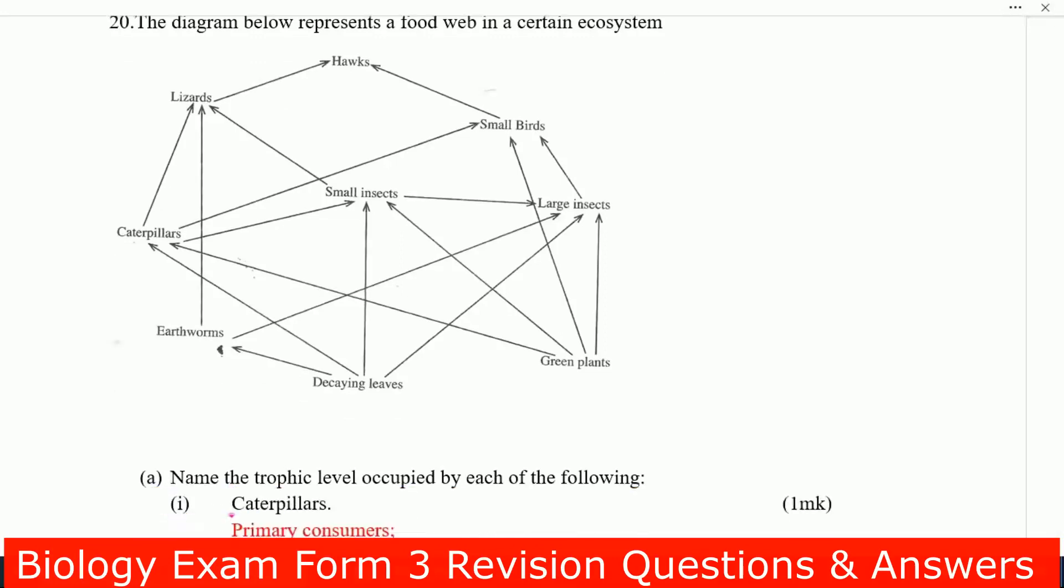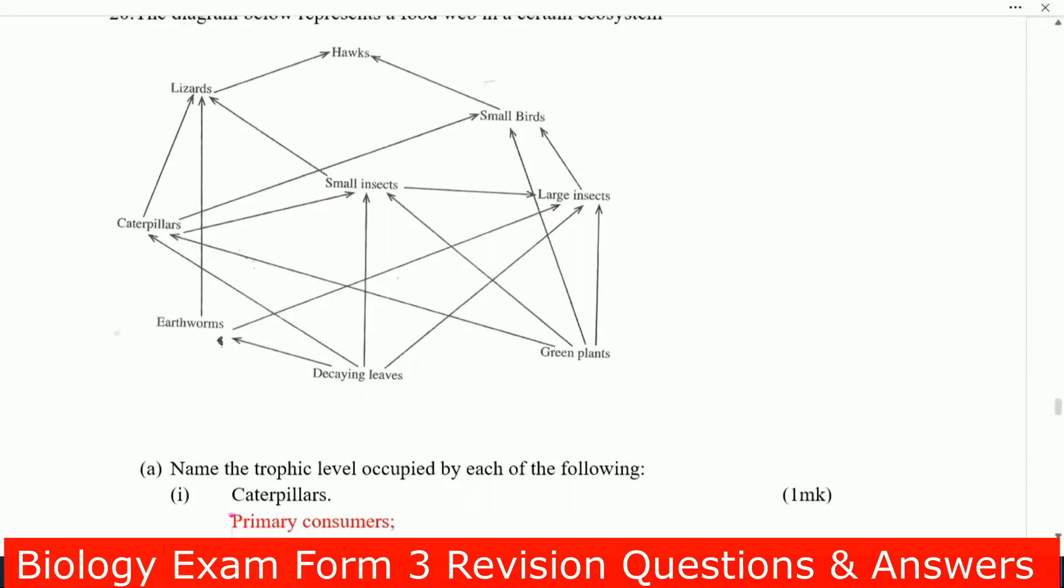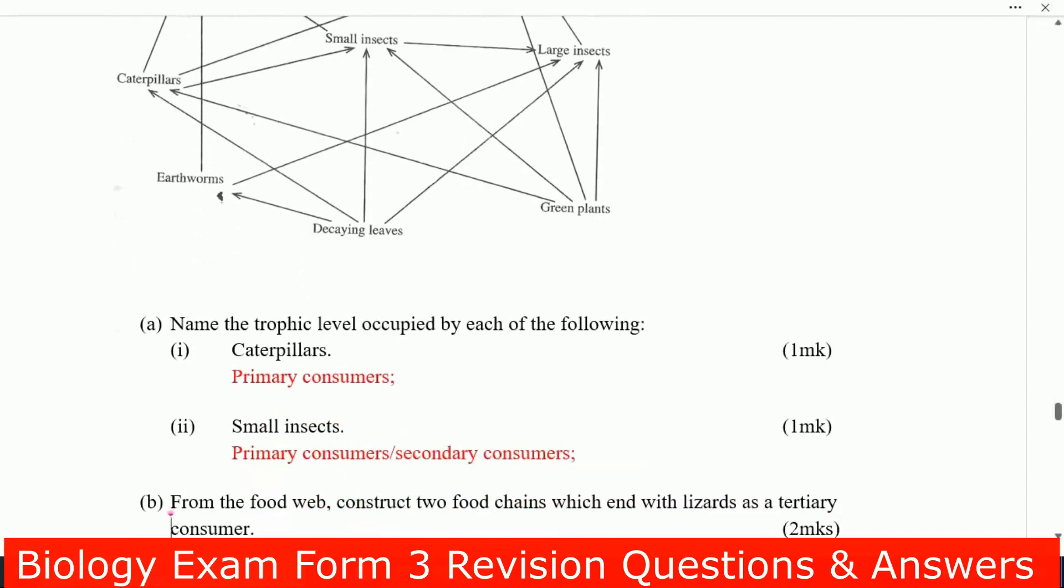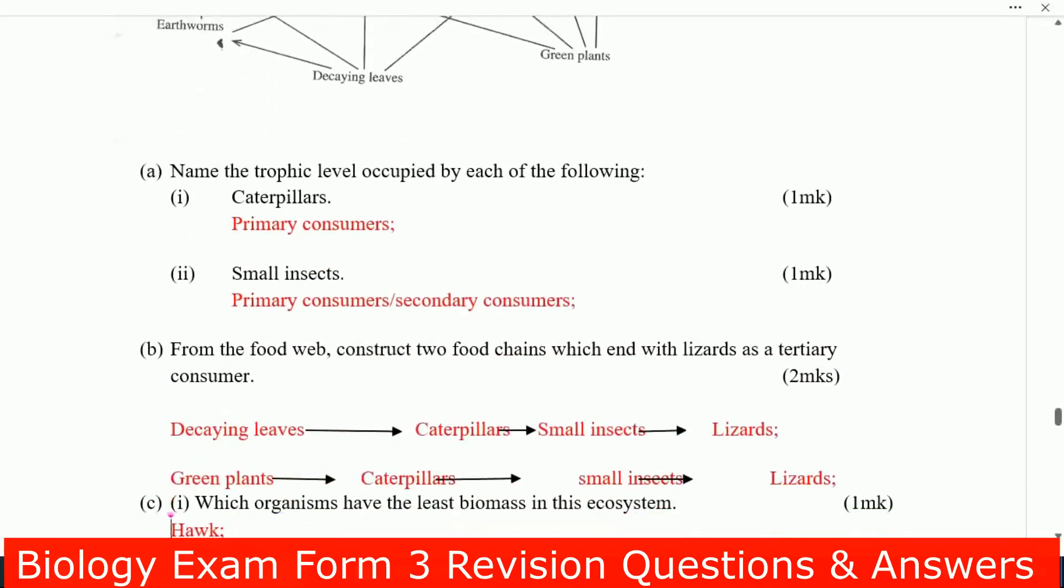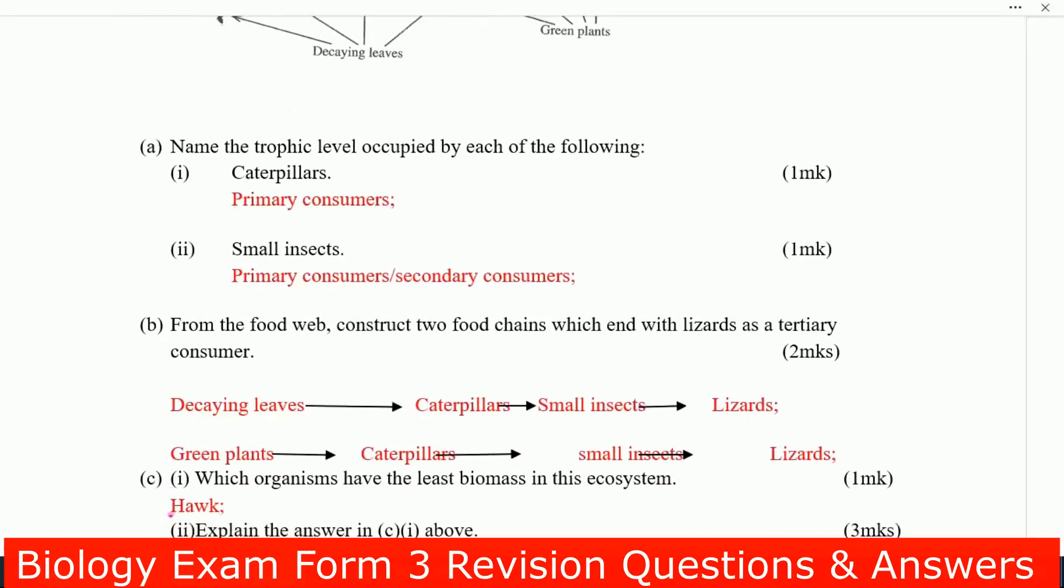You can also see green plant, this is where the food chain is starting. Green plants are also eaten by caterpillars, and green plants are eaten by large insects. So what are the questions? Name the trophic level occupied by each of the following: caterpillars, primary consumers. Small insects, primary consumers or secondary consumers.